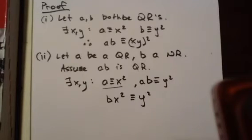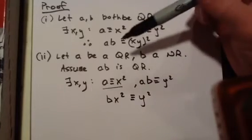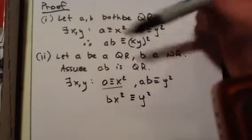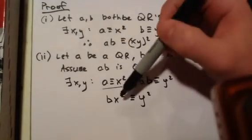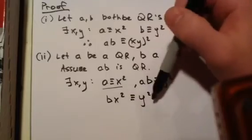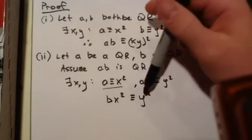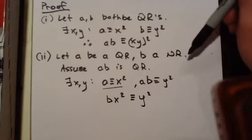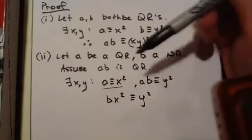Now we can multiply, well let's go ahead and say this. So if we multiply both sides by X inverse, we can make B congruent to a square. And then B would be a quadratic residue when we get our contradiction. So what we need to do is show that X inverse exists.